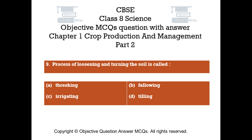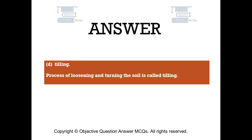Question number 9. Process of loosening and turning the soil is called. Option A: Threshing. Option B: Fallowing. Option C: Irrigating. Option D: Tilling. Process of loosening and turning the soil is called tilling.